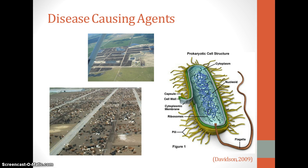Disease-causing agents such as pathogens and parasites generally enter aquatic systems through sewage, feedlots, or slaughterhouses. The main source of waterborne pathogens is untreated and improperly treated human waste. In developed countries, sewage treatment plants and pollution control devices have greatly reduced pathogens, where drinking water is generally disinfected through chlorination and filtration is used to remove some infectious agents.